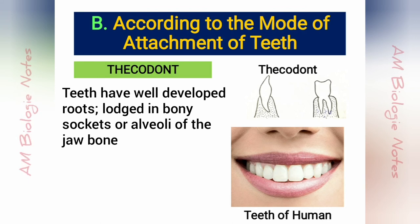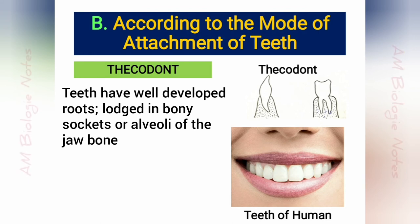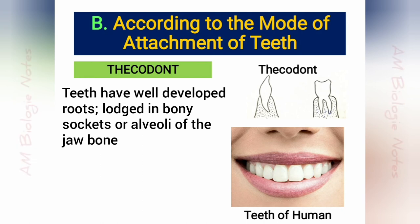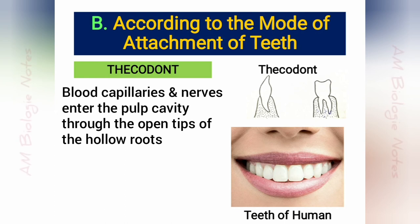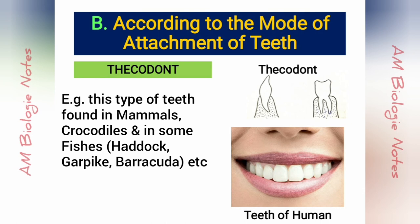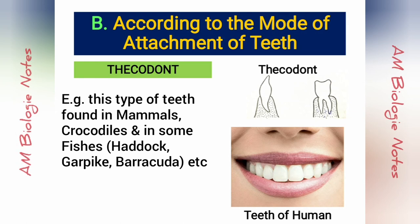Thecodont: Such teeth are characteristic of mammals. Teeth have well-developed roots and are lodged in bony sockets or alveoli of the jawbone. Blood capillaries and nerves enter the pulp cavity through the open tips of the hollow roots. Except in mammals, thecodont type of teeth are found in crocodiles and in some fishes.